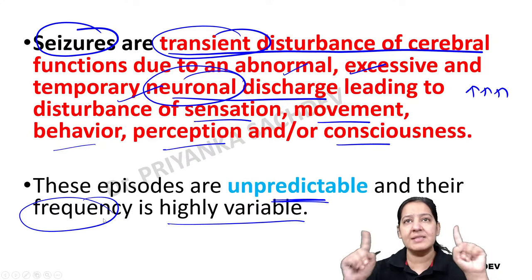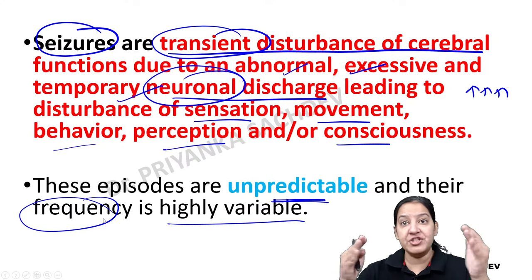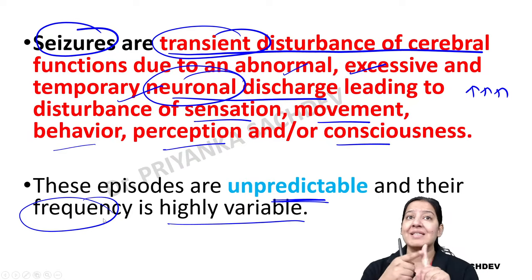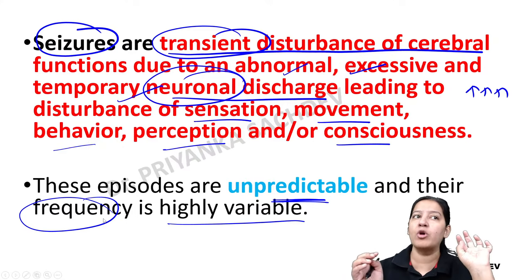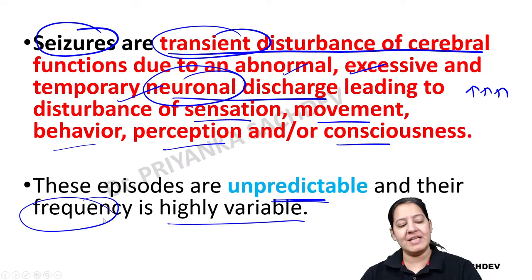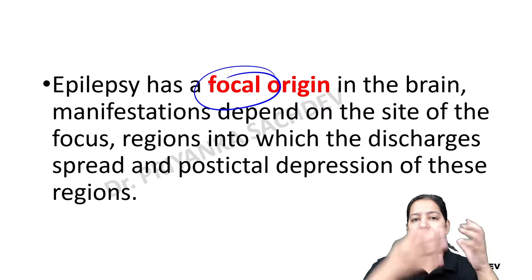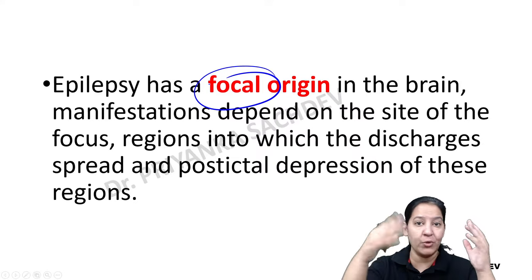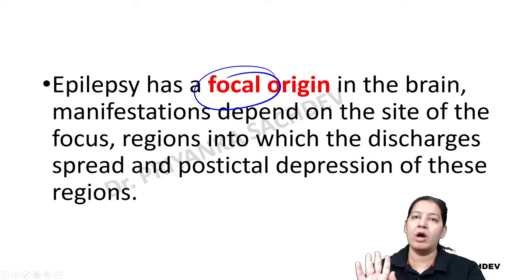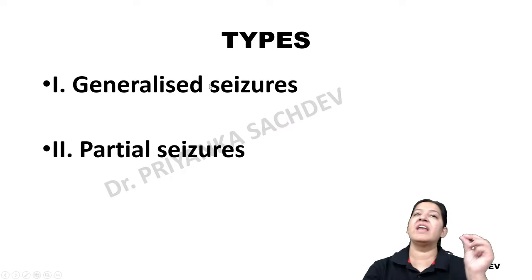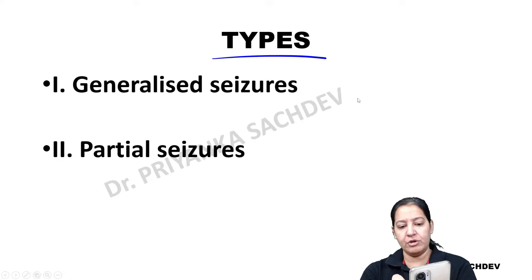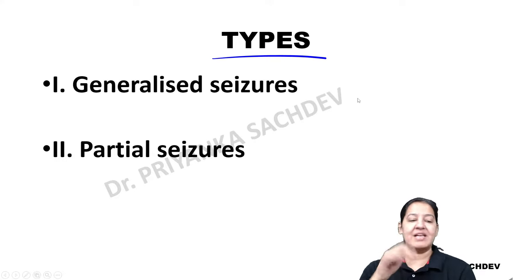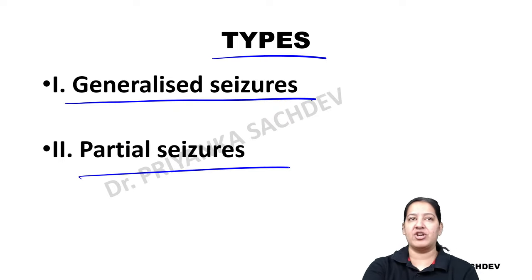A seizure is a transient disorder of brain function in which neurons do abnormal, excessive, temporarily excessive discharge causing disturbance in sensory, motor, behavioral, perceptual, and consciousness functions. It is focal — not diffuse. One focus in the brain is doing excessive discharge, not the complete brain. You should understand the various types of epilepsy before understanding its treatment.